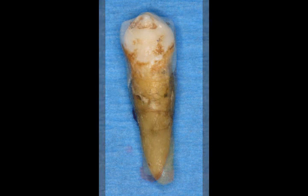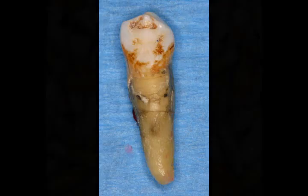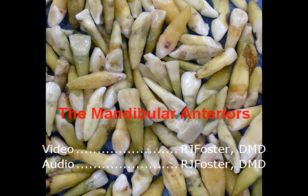Before we leave, let's take a look at the lingual surface of this canine. This canine, like all canines, has two lingual fossae: the mesial lingual fossa and the distal lingual fossa. I hope this video has cleared up some of the information associated with the mandibular anterior teeth.